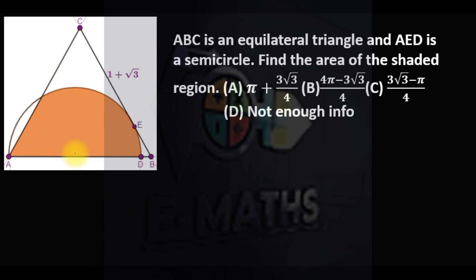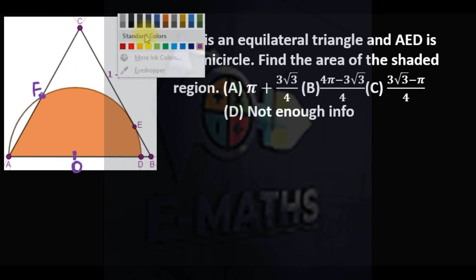Let's call the center O, and let the point of intersection of this line and the semicircle be F. So if we join O to F and O to E, we have the radius of this semicircle.